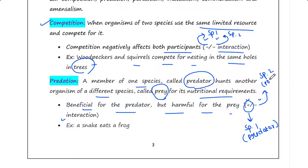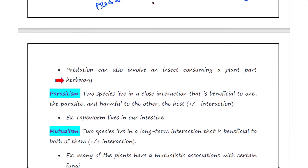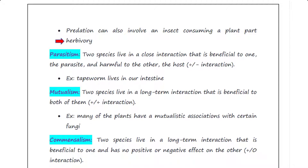Minus is for species two, the prey, which is getting harmed. For example, a snake eats a frog — here the snake is the predator and the frog is the prey. Predation can also involve an insect consuming a plant part; this type of predation is known as herbivory.